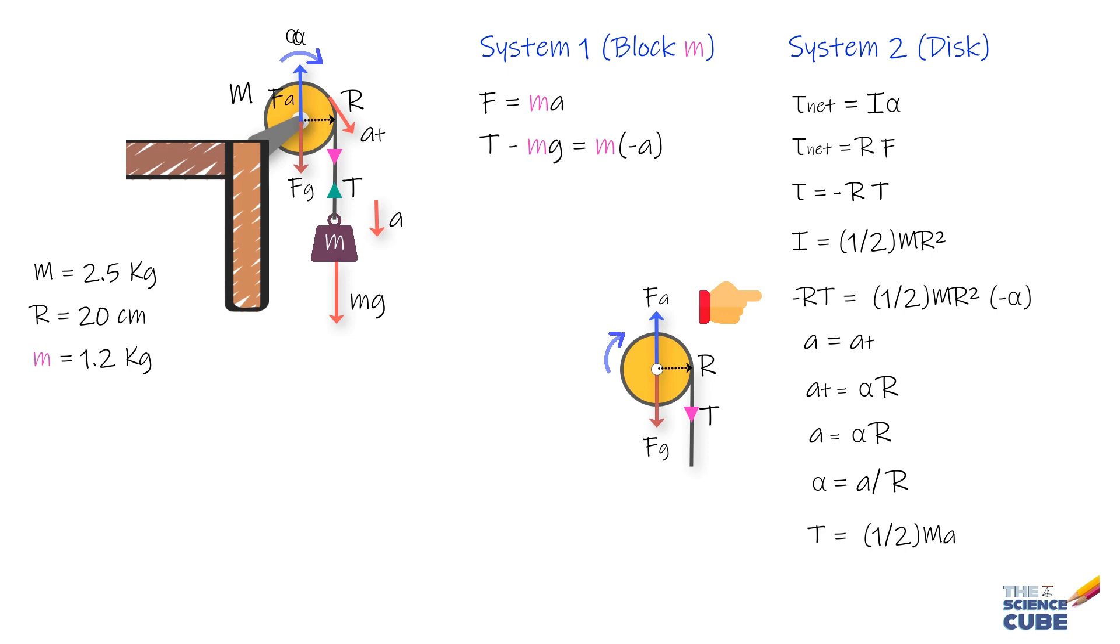Next, we put this expression for T here to get A equals 2m upon m plus 2m times g, and substituting values, we get A equals 4.8 meters per second squared.